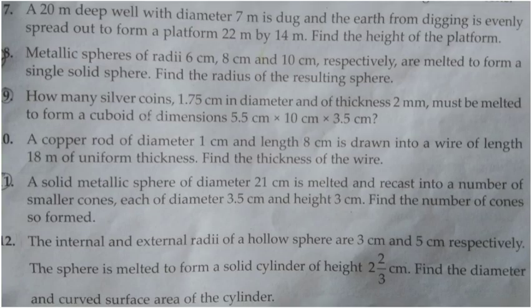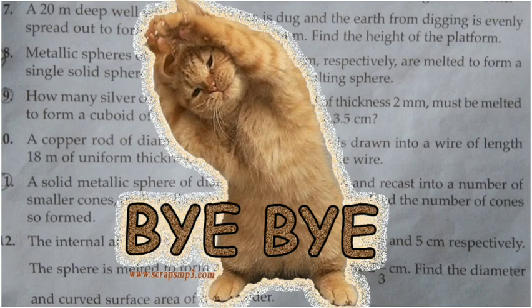Question 11: A solid metallic sphere of diameter 21 cm is melted and recast into a number of smaller cones, each of diameter 3.5 cm and height 3 cm. Find the number of cones so formed. It's the same thing. I'm not going to go into detail with this one. You can write what's given - diameter, radius, and that's all for Type 2 questions. Bye!